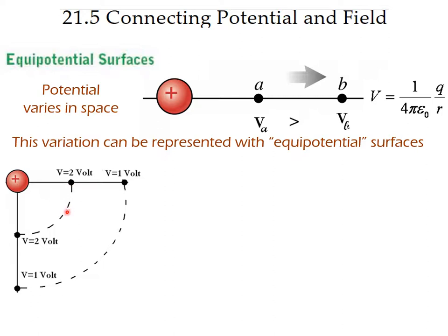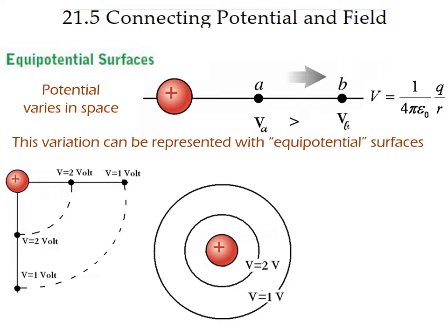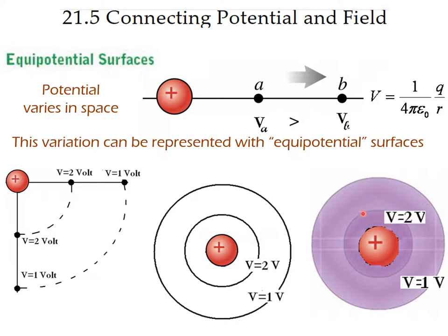We can represent that with dashed lines. Say the potential here is 2 volts — all these points are at 2 volts. Likewise, all points at the same distance from the charge would be at 1 volt, and we can continue circling the charge. Coming out of the plane, all points on a sphere's surface will be at 2 volts, and all points on a larger sphere will be at 1 volt.